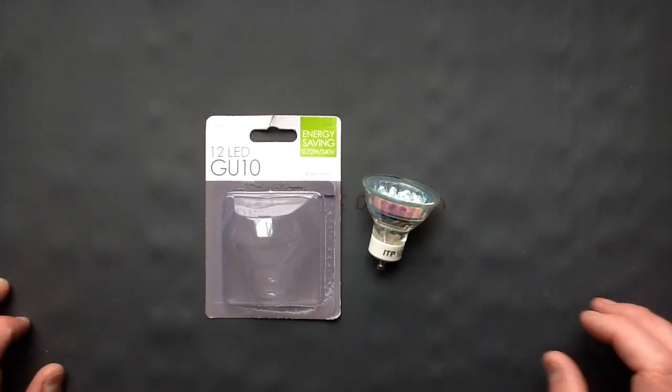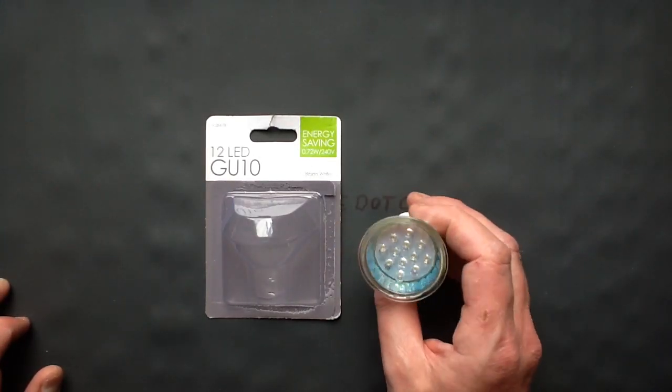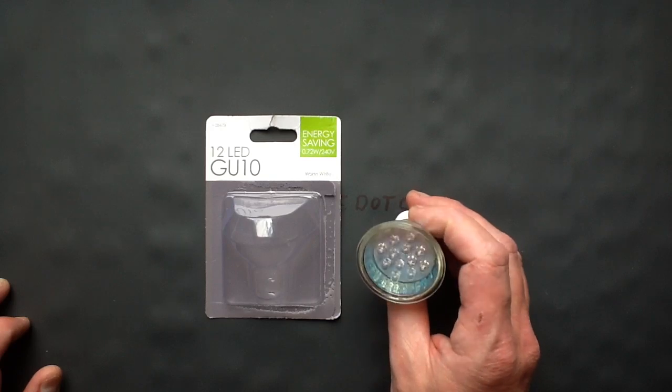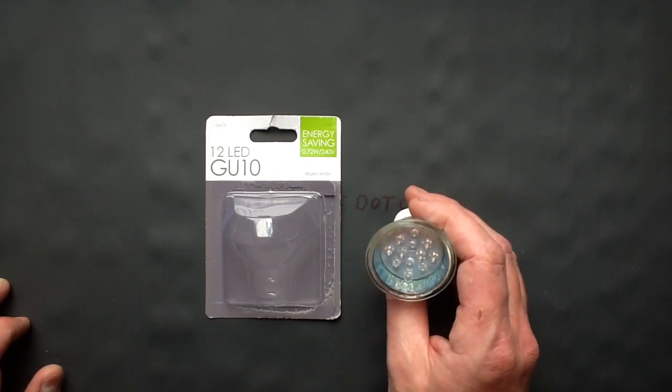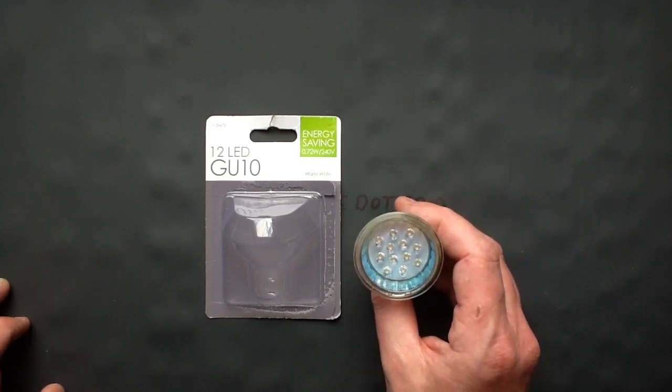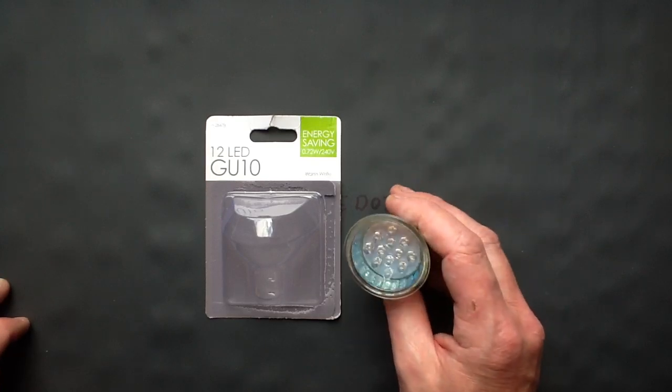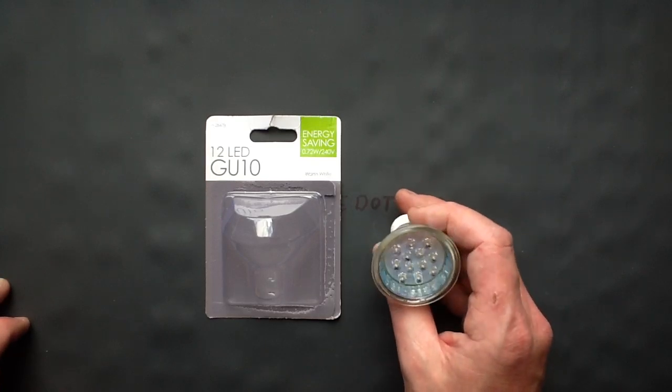This is a mains voltage LED GU10 lamp from Pound World. Now Pound World in the UK are the nemesis of Poundland. It's a different chain and they have similar stuff, but they also have some interestingly different products.